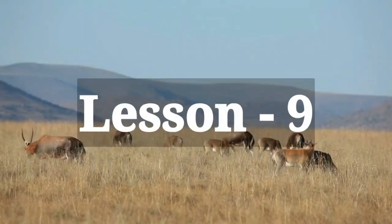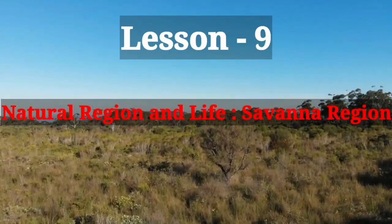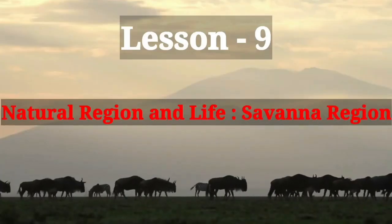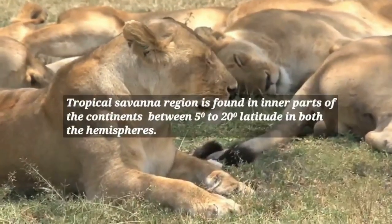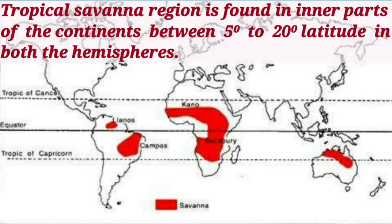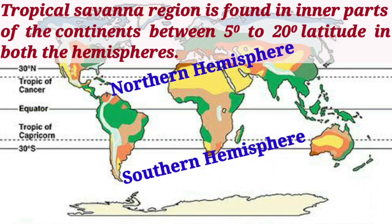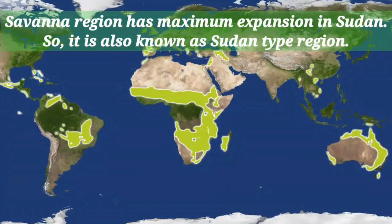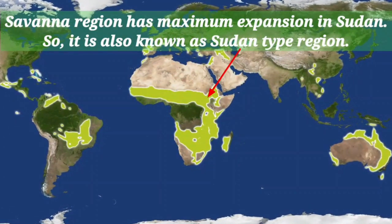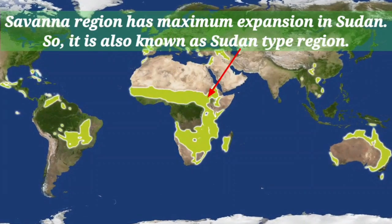Let us go through the key points of the lesson: natural region and life in savannah region. The tropical savannah region is found in inner parts of the continents between 5 degrees to 20 degrees latitude in both the hemispheres. The savannah region has maximum expansion in Sudan, so it is also known as the Sudan type region.